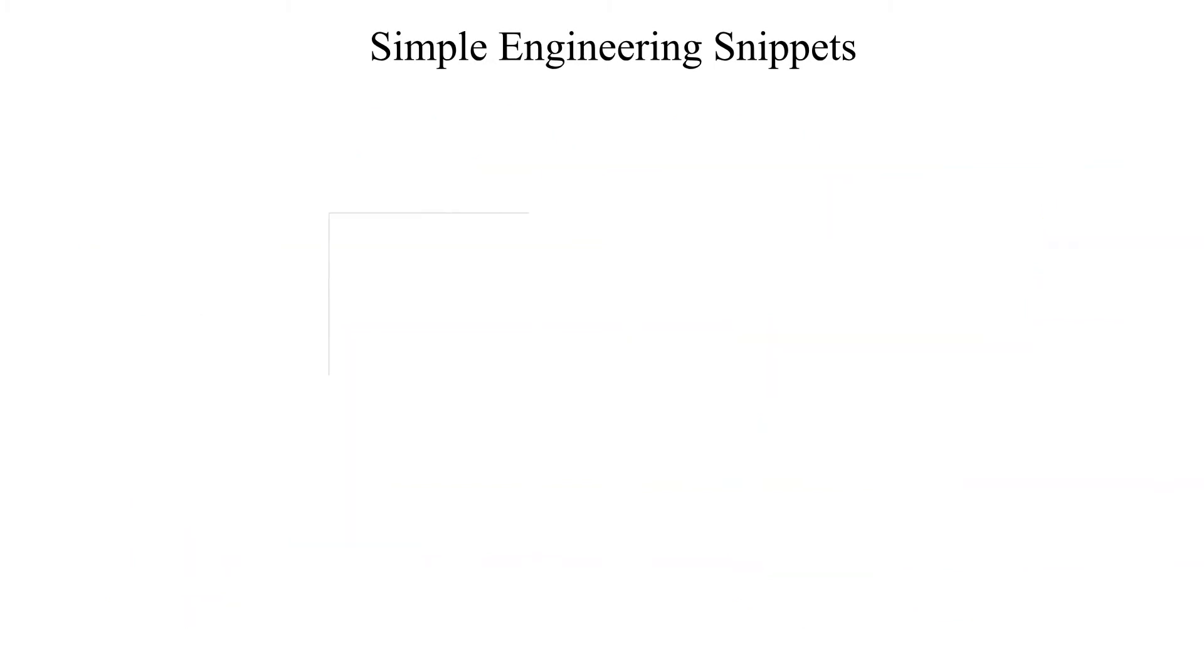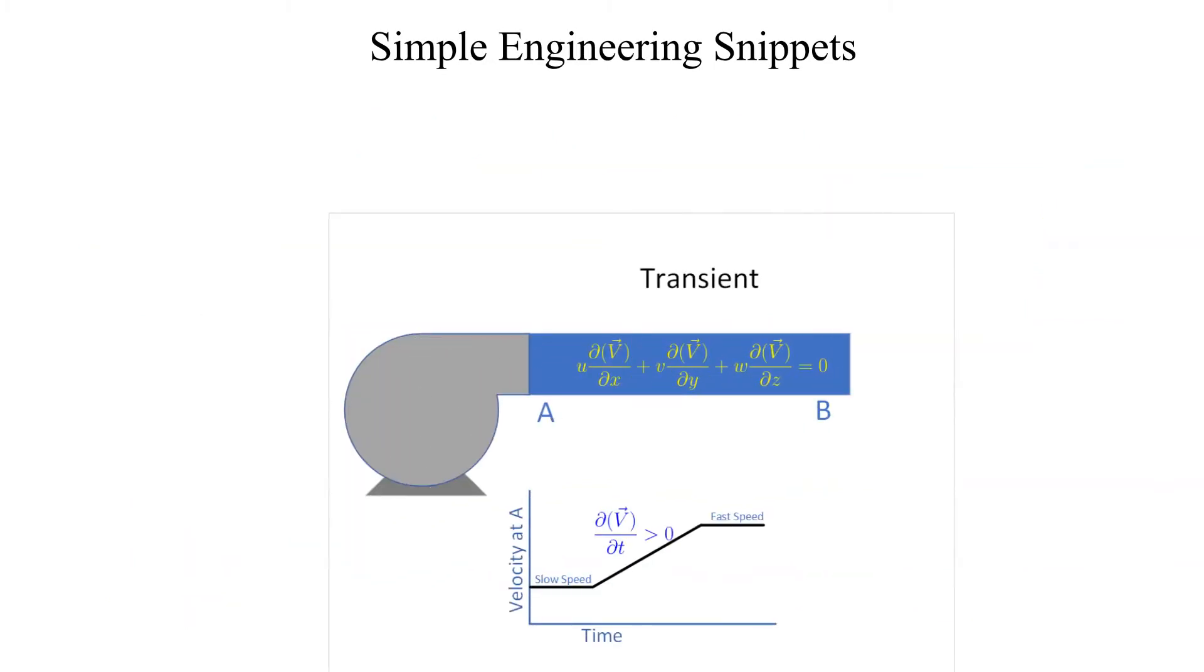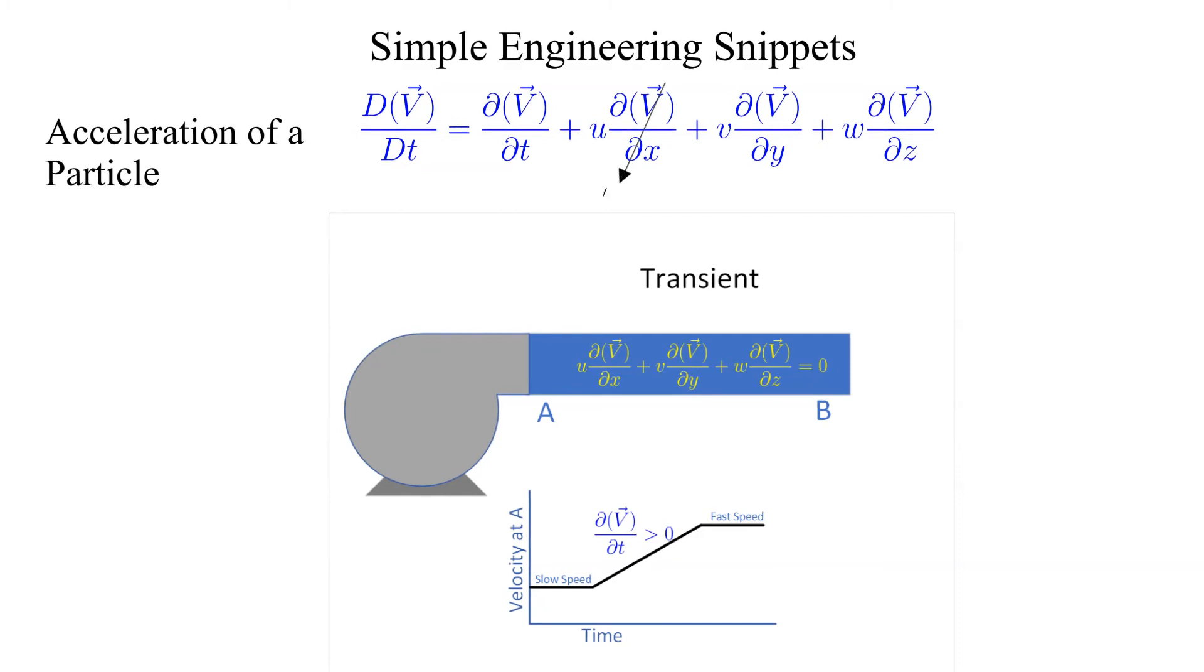Now let's return to the straight pipe but consider the situation as we transition from a pump running at slow speed to running at fast speed. With incompressible flow, the velocity gradient with respect to x remains zero throughout the pipe. The partial derivative with respect to time is positive as the flow field transitions from the slow speed flow to the fast speed flow. The entire flow field undergoes an acceleration during the pump shift.